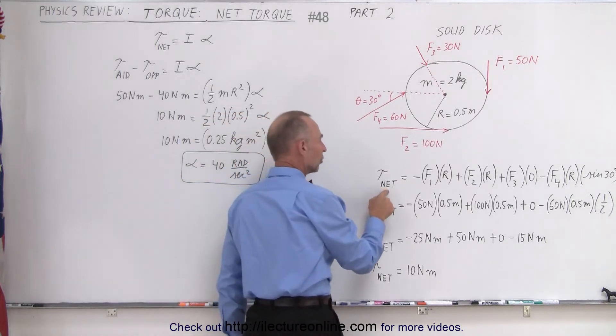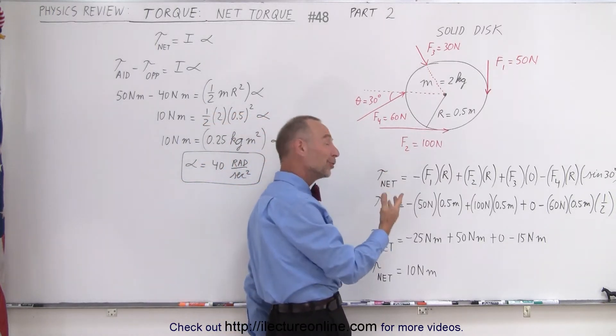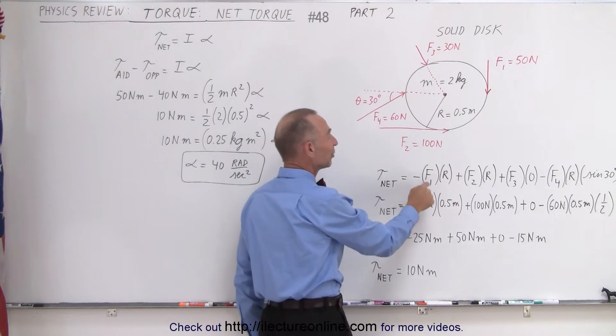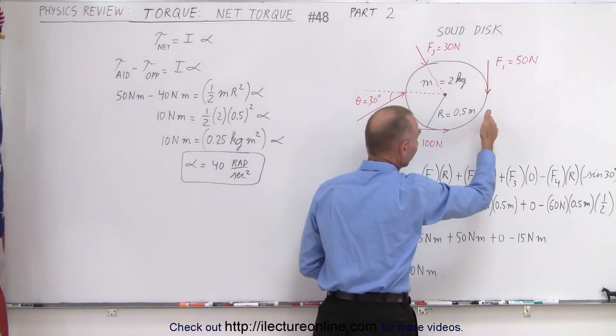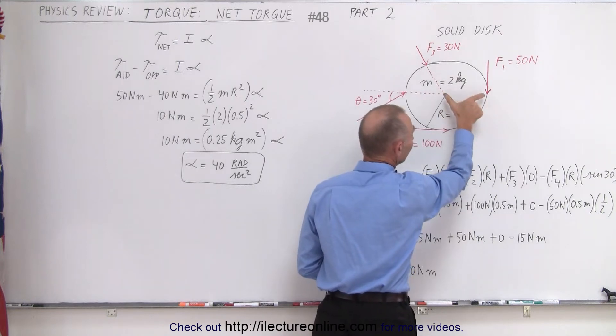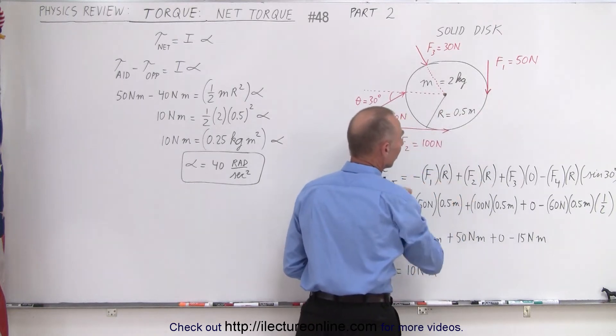Again, the magnitude of the torque is equal to the force times the perpendicular distance from the line of action of the force to where the point is rotating. So in this case, that would be the radius of the disc.